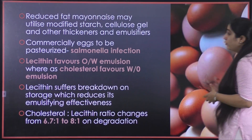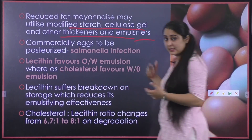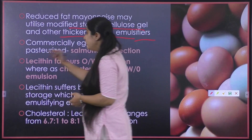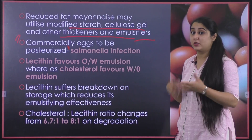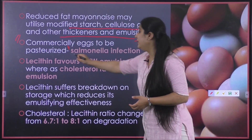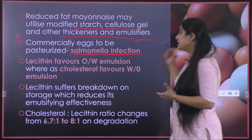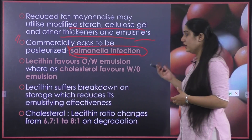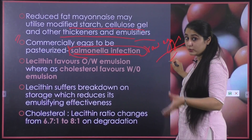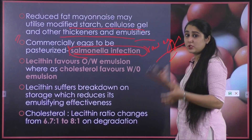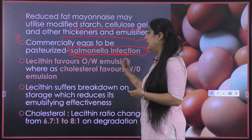For reduced fat mayonnaise, we can utilize modified starch, cellulose gel, and other thickeners and emulsifiers. Commercially, eggs must be pasteurized. For commercial-scale production it is very important to use pasteurized eggs because eggs carry a very high risk of salmonella infection. Since we are using raw eggs in mayonnaise — they are not being cooked — they must be pasteurized first to eliminate any chance of salmonella infection.